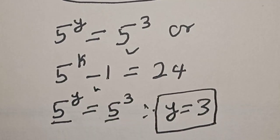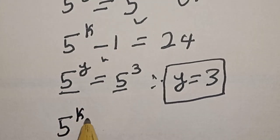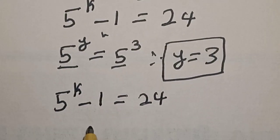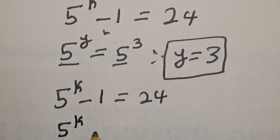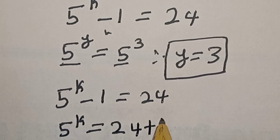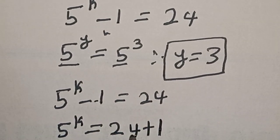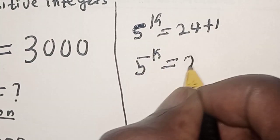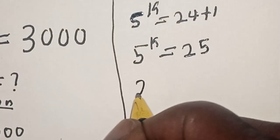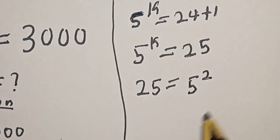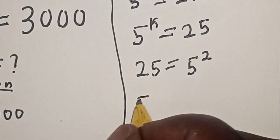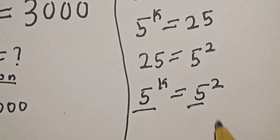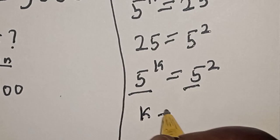From the second case, 5 raised to power k minus 1 is equal to 24. Collecting like terms, 5 raised to power k equals 24 plus 1, which gives 5 raised to power k equals 25. And 25 equals 5 squared, so 5 raised to power k equals 5 squared. They have the same base, therefore k is equal to 2.